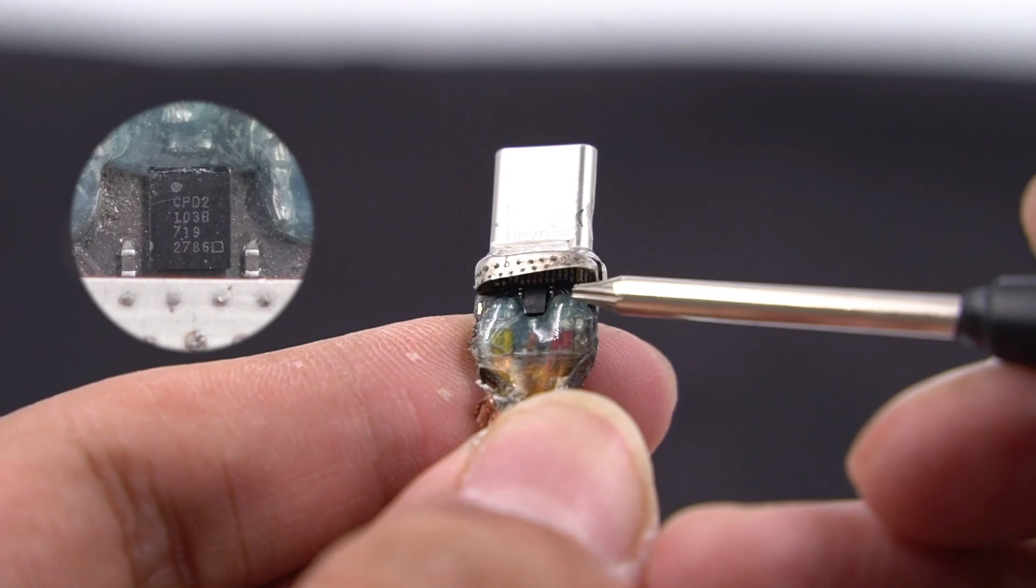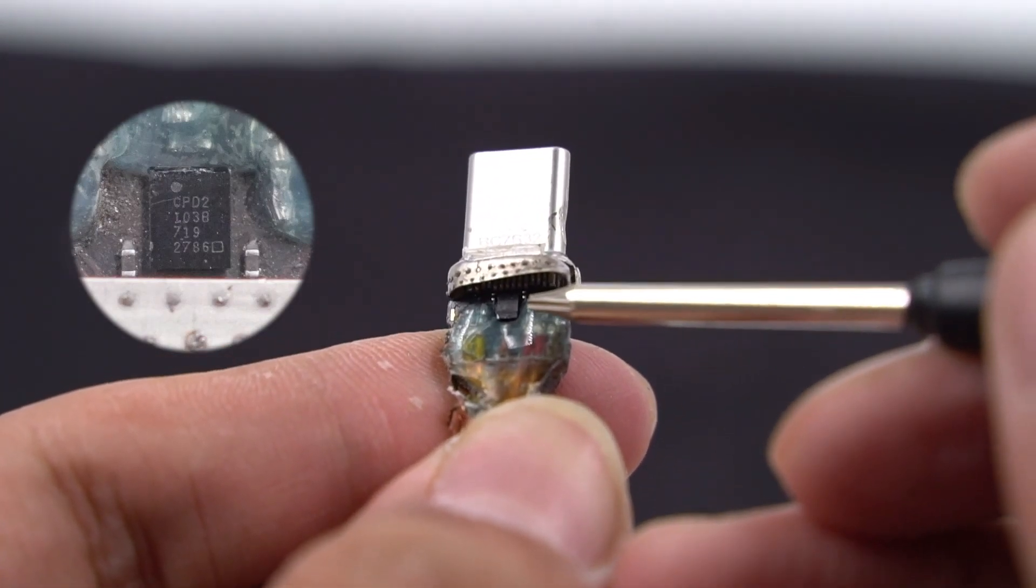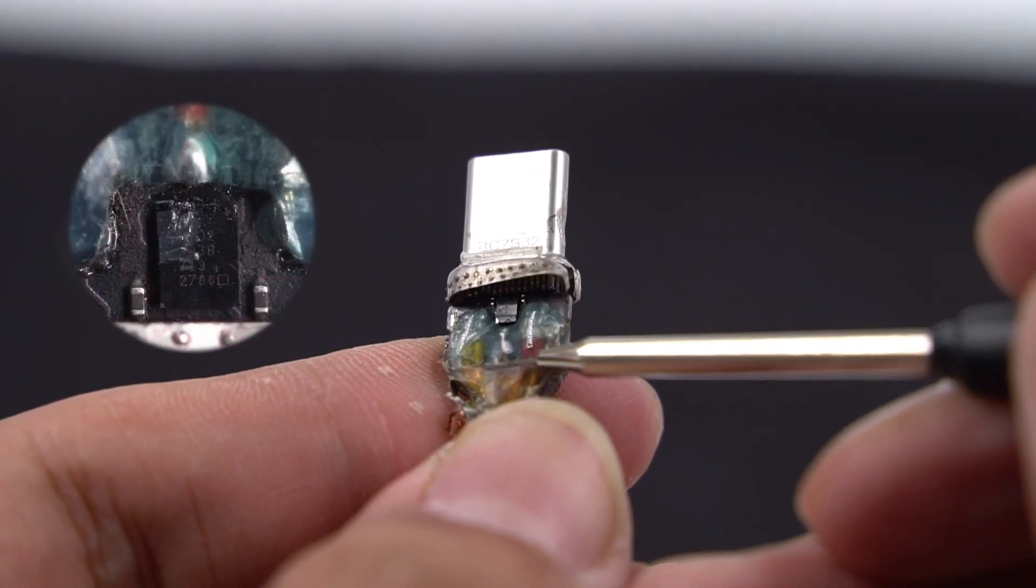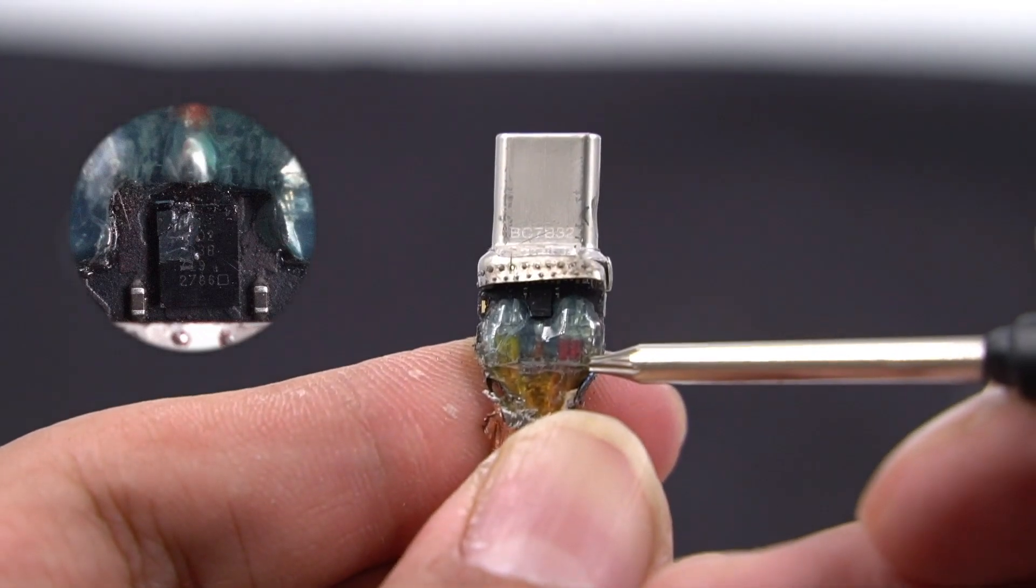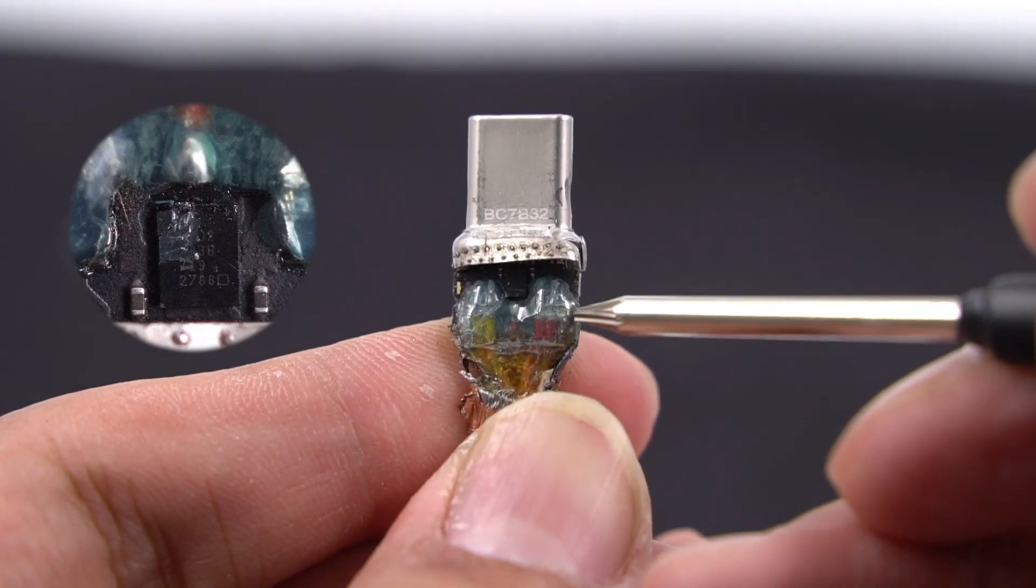The other end of the cable is the same, which also has an e-mark chip. This chip comes from Cypress Modeless CYPD2103, which belongs to EZ-PD CCG2 series, and complies with the latest USB Type-C and PD standards.